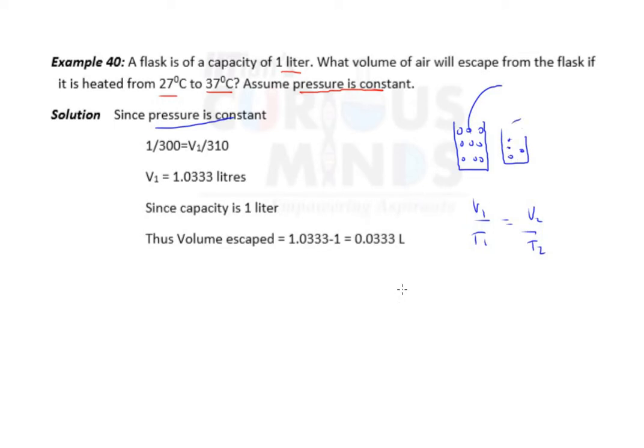Whenever the amount is same and pressure is same, we can always apply this formula V1 by T1 is V2 by T2, because this is an ideal gas. We assume this is ideal gas.